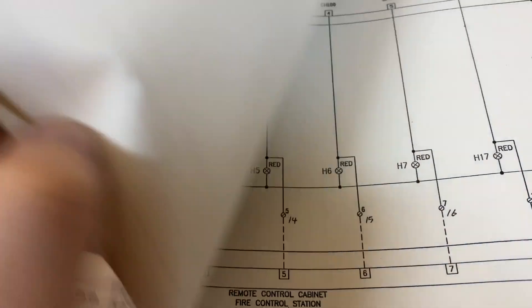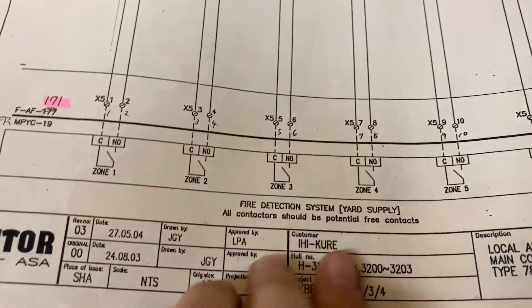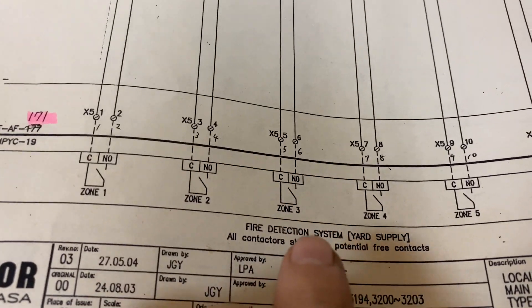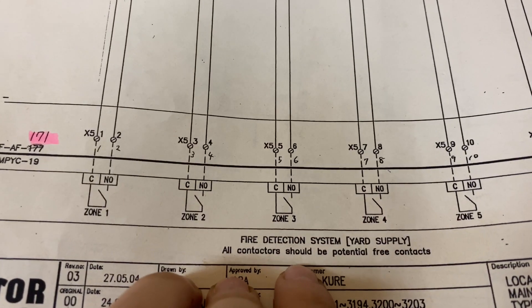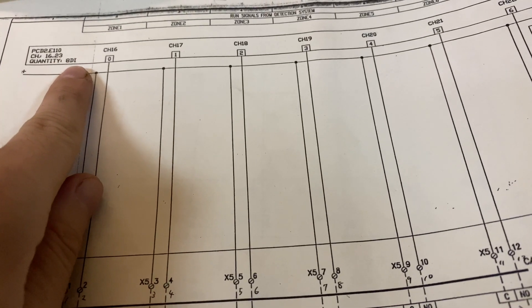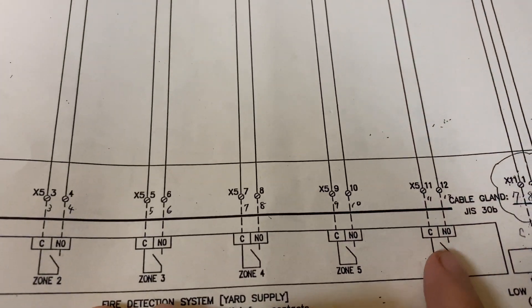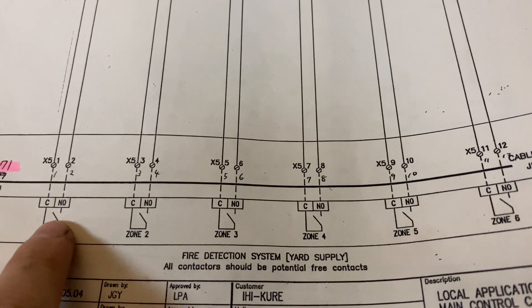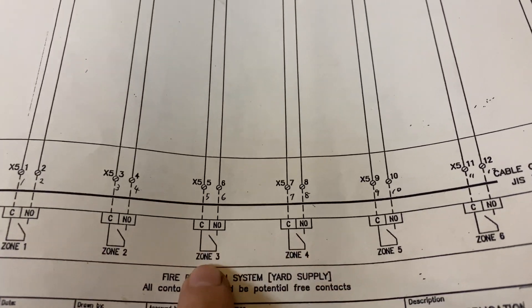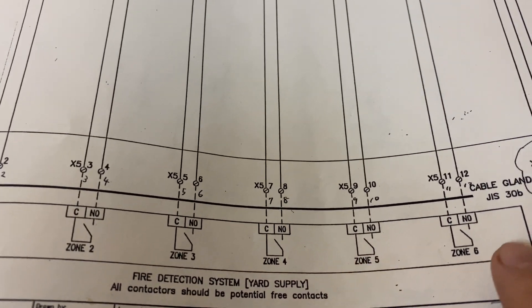This is our wiring diagram for the water mist system. I'm focusing on the pages with a link on the fire detection system — this side is the fire detection system and this is the water mist side. Based on my understanding, the zones are divided into six areas: main engine, auxiliary boiler, generator room port side, starboard side, incinerator, and purifier area.